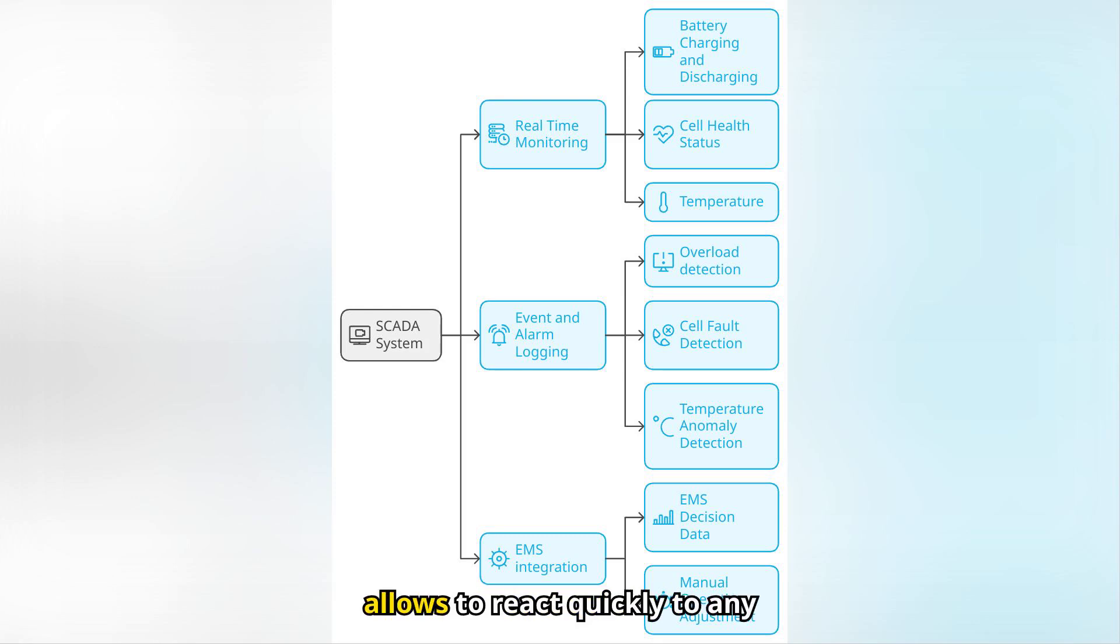This system is essential to ensure the safe and efficient operation of the facilities, as it provides accurate data on the status of the equipment and allows to react quickly to any eventuality. The key functions of SCADA are real-time monitoring. SCADA provides detailed information on battery status, including data such as charge level, discharge, temperature, and cell conditions.